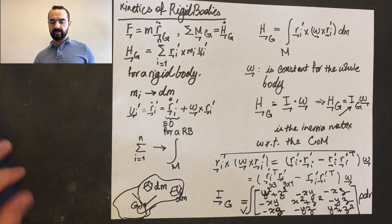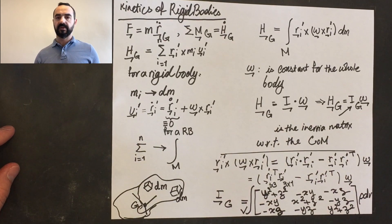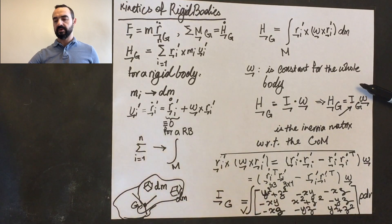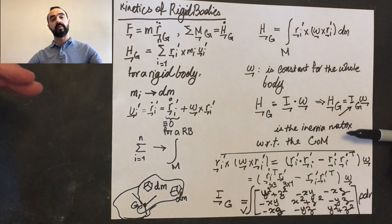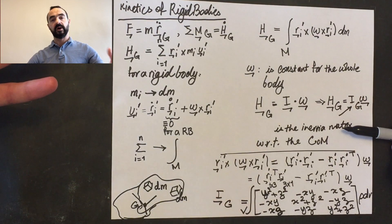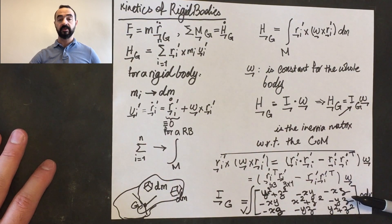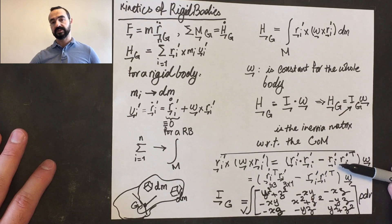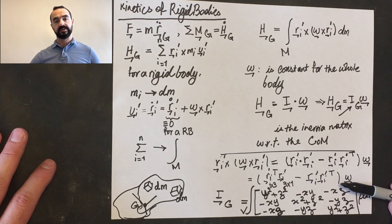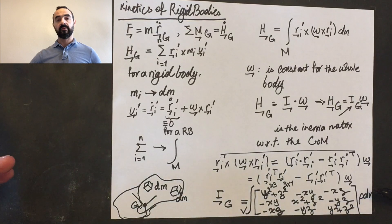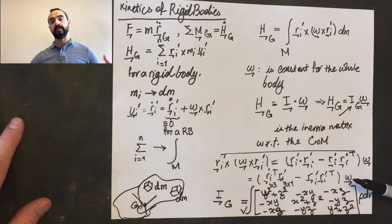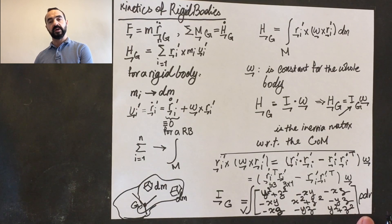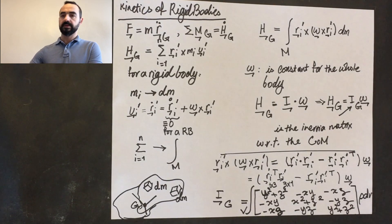This is already a significant amount of material. It starts from the system of particles, and then we simplify and modify that for a rigid body. If you are interested in the proof, you can start with the cross product expansion, expand the terms in the bracket, perform all the math operations, and show that the inertia matrix simplifies to this equation.